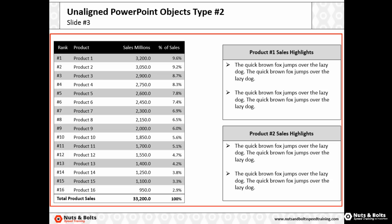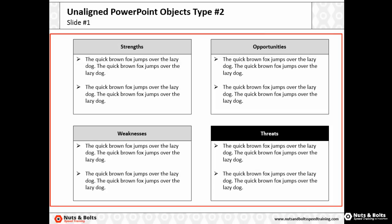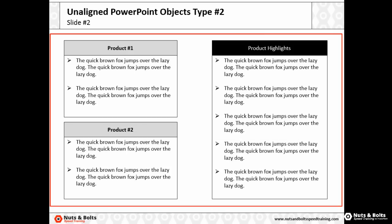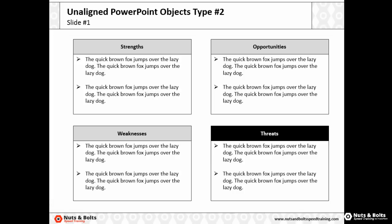Notice that the boxes begin to drift out as I flip forward, and drift back in as I move backwards. This is what I mean by type 2 unaligned objects — these were not set on my slide master, I built them myself. As I flip between slides they begin to move around, creating a bit of seasickness that you want to avoid. These are the types of misalignments you can quickly solve with the Hammer Tool.